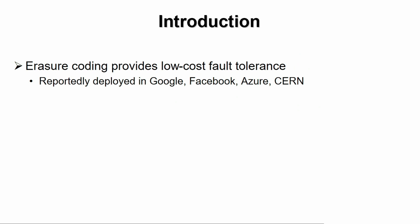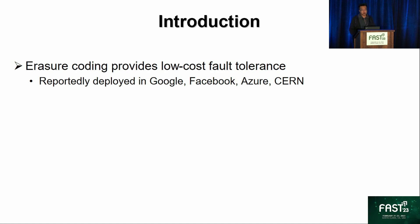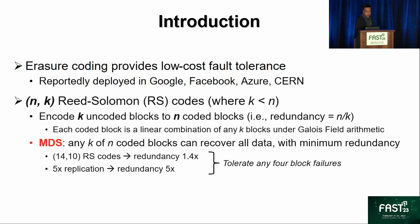Erasure coding has been widely deployed in practice and there are many ways to construct erasure codes. The most common and popular one is Reed-Solomon coding. The idea is we can configure two parameters n and k, where we encode k data blocks into n encoded blocks. The redundancy is n over k.